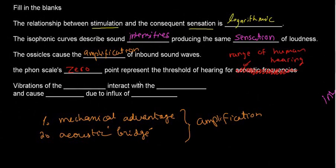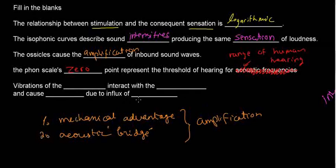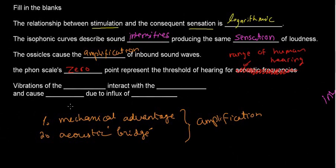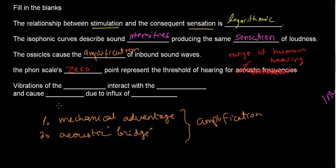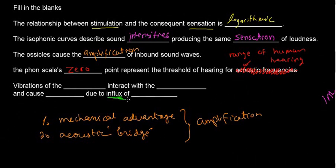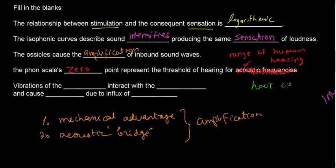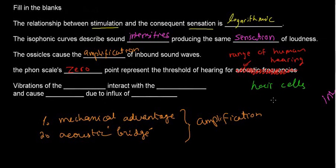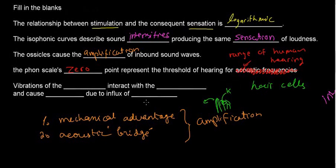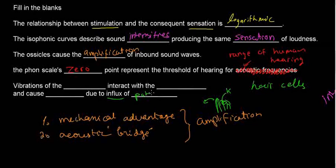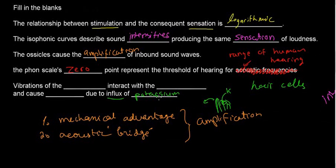Vibrations of something interact with something and cause something due to influx of something. First, the mention of influx clues us in to ions going in or out. Thinking about the hearing process, I think of the hair cells. These hair cells have stereocilia with bridges between them, and when they're pulled back, potassium goes in — so there's an influx of potassium.